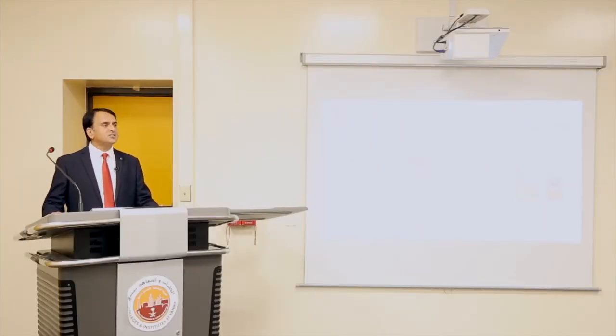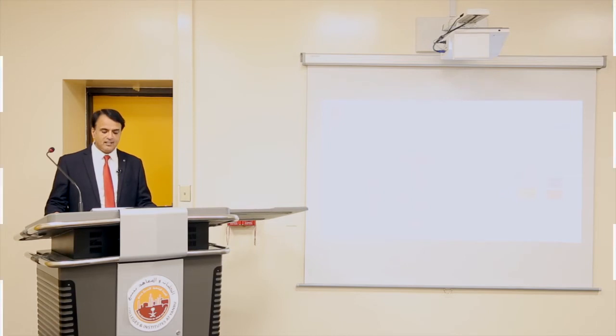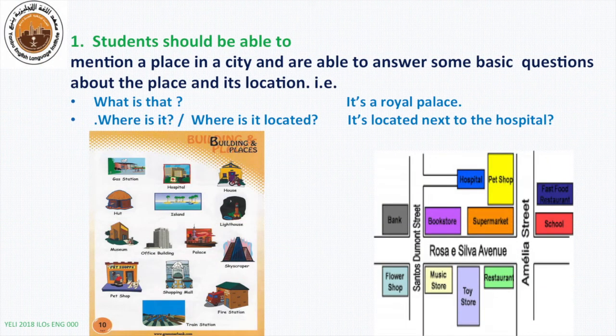First of all, our students in Week 5 and Week 6 should be able to mention a place in a city and are able to answer some basic questions about any place and its location. For example, the question can be: what's that? The answer: it's a royal place. Where is it? Or where is it located? It is located next to the hospital. So the students should be able to learn different names of places in any town, city, or village, and also they should be able to explain the location using different prepositions like next to, beside, among, etc.